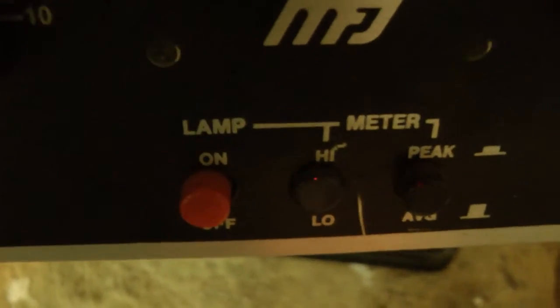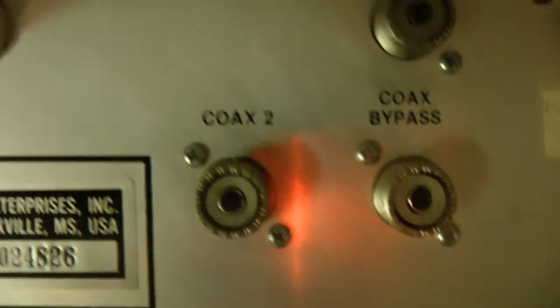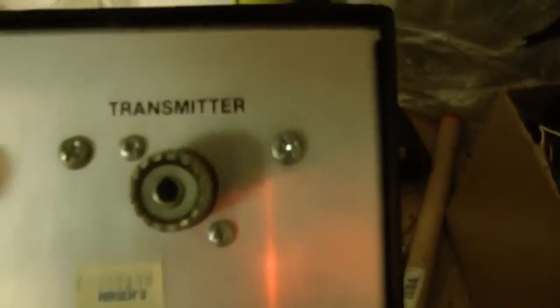The back of the unit has basic coaxial as you can see, a balance line, coax, bypass ground, and transmitter connection.